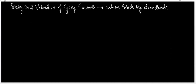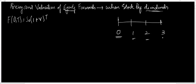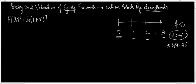Let me consider the pricing and valuation of equity forwards when stocks are paying dividends. In a simple case we calculate the forward price as spot price times (1 + r) raised to power t. Now since the stock is paying dividends, we need to make an adjustment. The analysts will reduce the spot price by the amount of dividends. For example, if the stock is currently traded at 100 and dividends are 0.25 in one year, the price is reduced to 99.75.